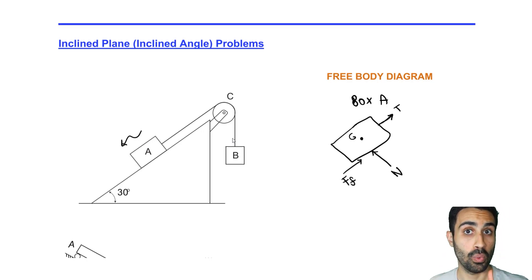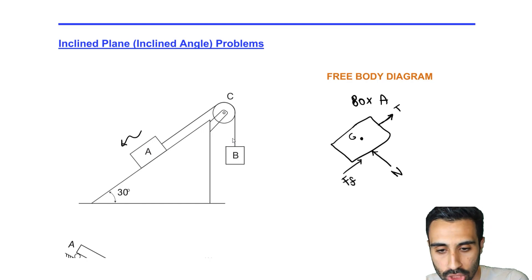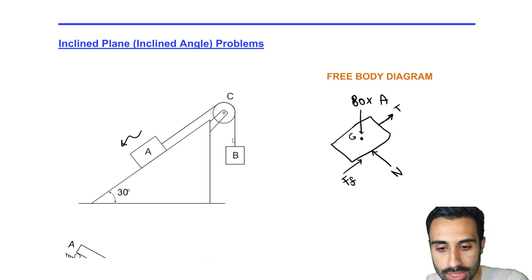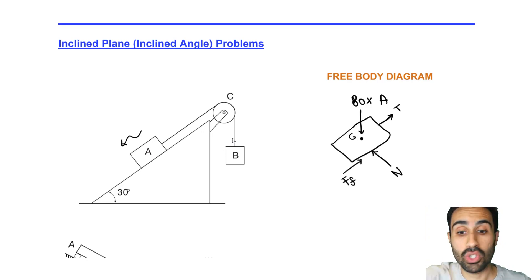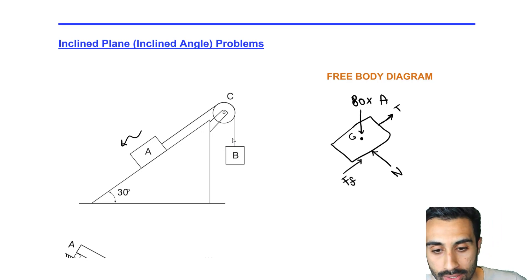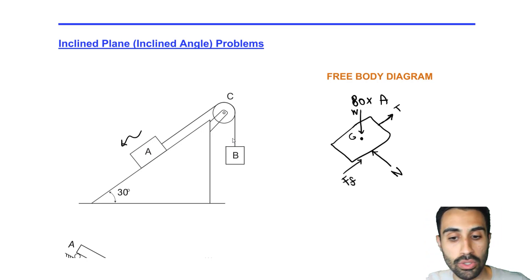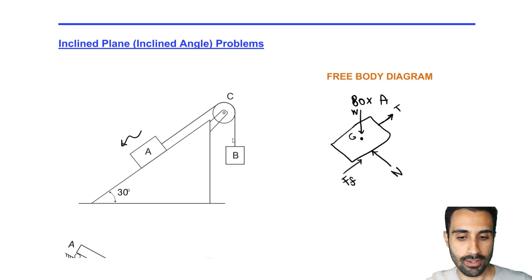The last force is the weight W, which always acts vertically downward toward the center of the earth. So that completes the free body diagram: tension T, normal force N, friction force F, and weight W.